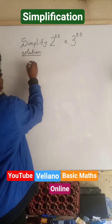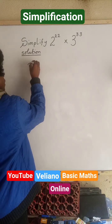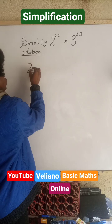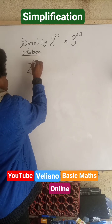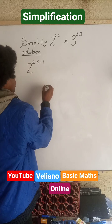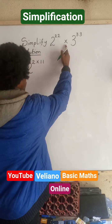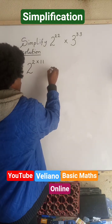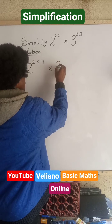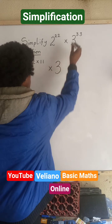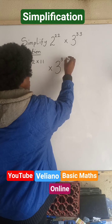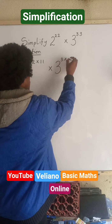Which is very simple. This 2 power 22 is the same thing as 2 power 2 multiplied by 11. We have a multiplication sign here. We have 3 power 33, and 33 is the same thing as 3 multiplied by 11.